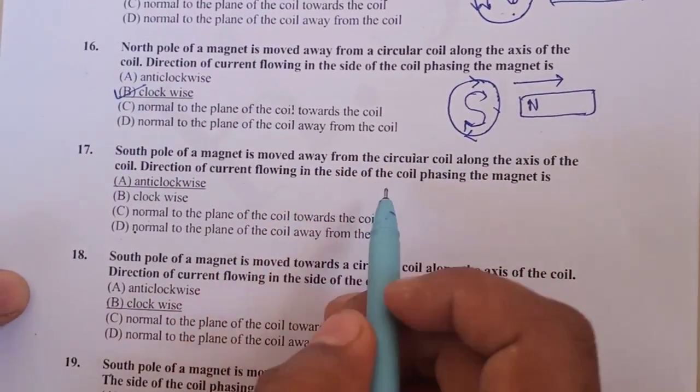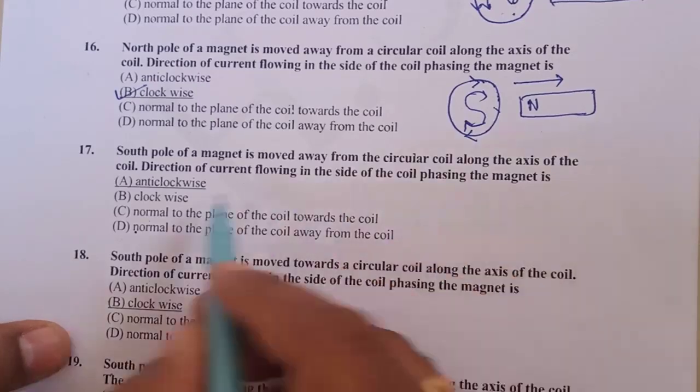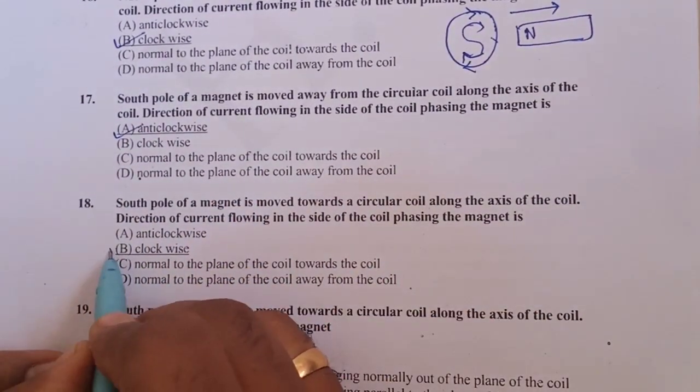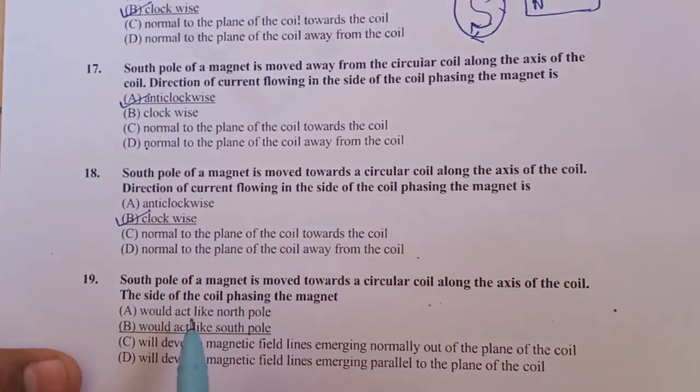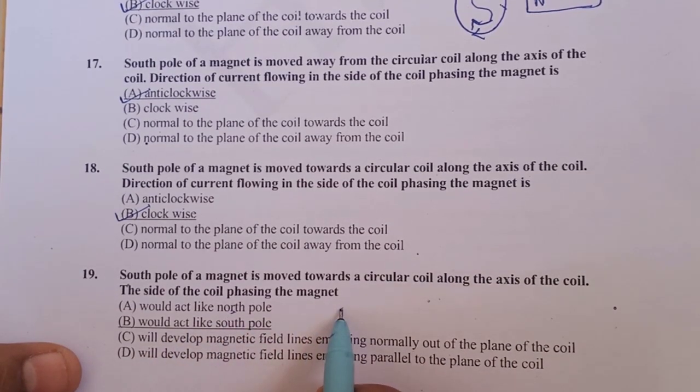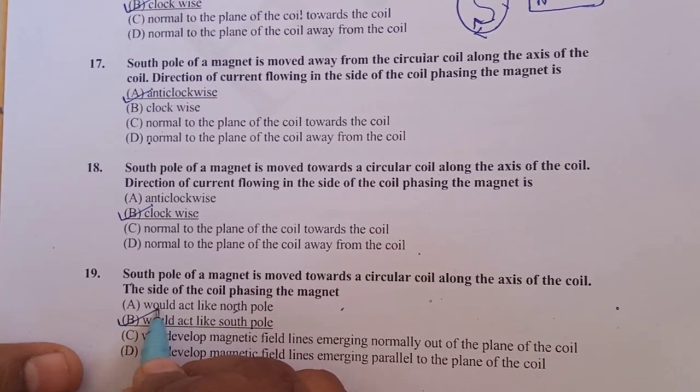South pole of the magnet is moved towards the circular coil, then it will produce the current in anticlockwise direction. If it is taken away, it will produce the current in clockwise direction. South pole of the magnet moves towards the circular coil along the axis of the coil. The side of the coil facing it would act like a south pole.